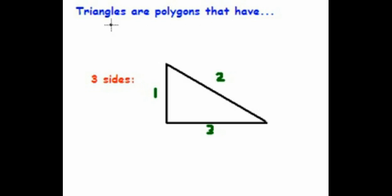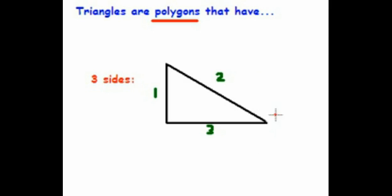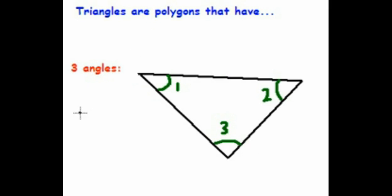Triangles are polygons. Polygons are simply many-sided two-dimensional figures, like hexagons, octagons, pentagons, and of course triangles. Triangles have three sides — sometimes these sides are the same, and sometimes they are different. Triangles also have three angles. In fact, that's what the word means: tri-angles, three angles. Sometimes these angles are the same, but more often than not they are different.